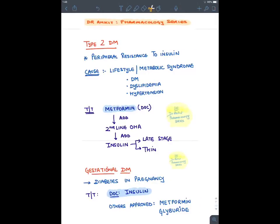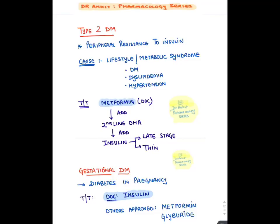In Type 2 diabetes, insulin is present in the body but cells are not responding to it — this is known as peripheral resistance to insulin. The cause is multifactorial and polygenic, mainly due to lifestyle. These patients are generally obese with sedentary lifestyles eating high-calorie diets, and they suffer from diabetes, dyslipidemia, and hypertension — this combined syndrome is known as metabolic syndrome. The drug of choice is metformin, which reduces insulin resistance. If uncontrolled, second-line oral hypoglycemic agents are added.